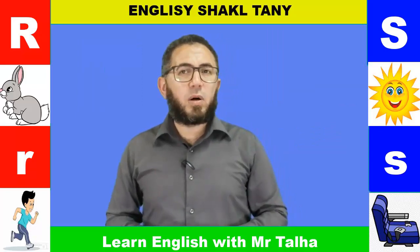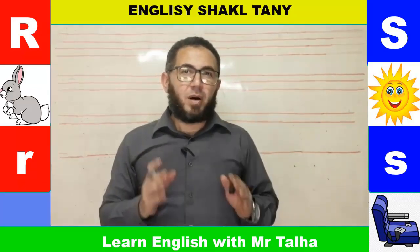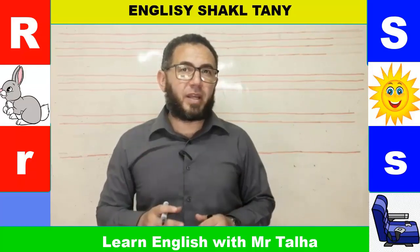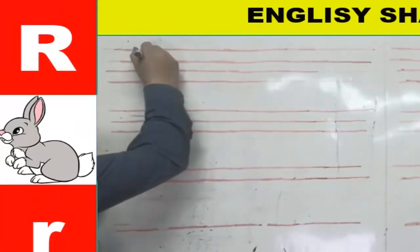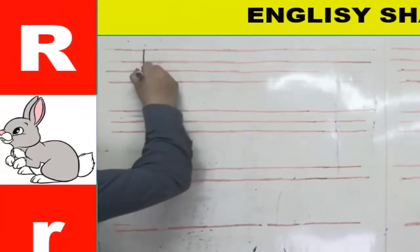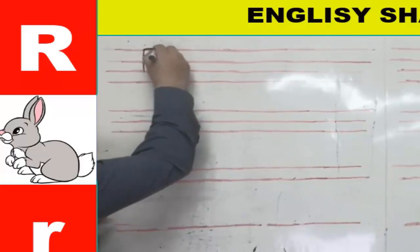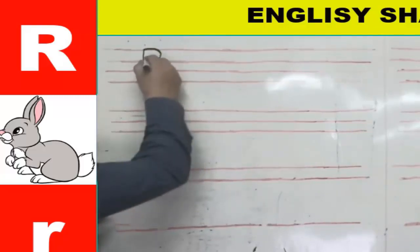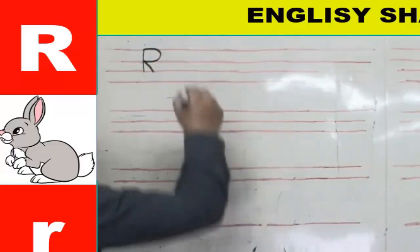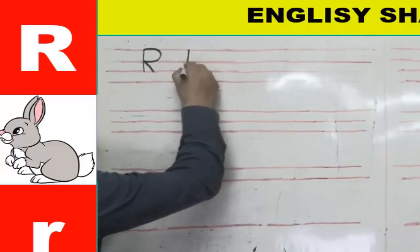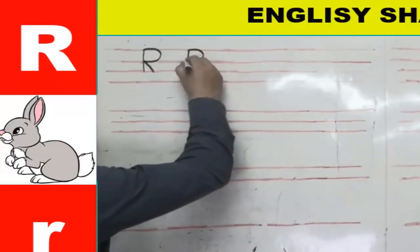Now let's see how to write the uppercase R and the lowercase r on the lines. For the uppercase R on four lines, start from line one, go straight down to line three, then a curved line up to line two, then a diagonal line down to line three. That gives us: straight, curved, then diagonal.